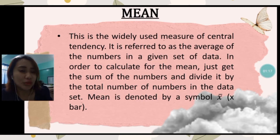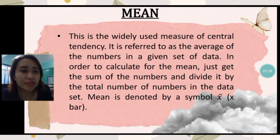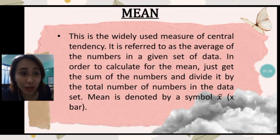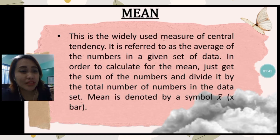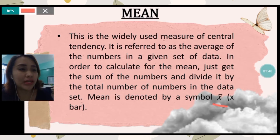To start with, we have here the mean. The mean is the widely used measure of central tendency. It is referred to as the average of the numbers in a given set of data. In order to calculate the mean, just get the sum of the numbers and divide it by the total number of numbers in the data set. The mean is denoted by the symbol x-bar — this symbol right here that is read as x-bar.